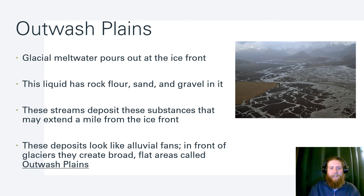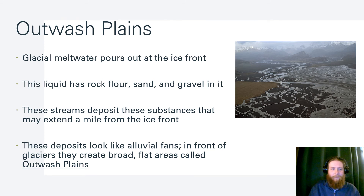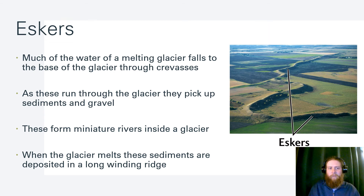Outwash plains are glacial meltwater pouring out the ice front, carrying rock flour, sand, and gravel. These deposit as the water slows down, up to a mile in front of the ice front, and look a lot like alluvial fans of rivers. Eskers form when water inside a melting glacier falls to the base, picking up sediments and gravel, forming miniature rivers inside the glacier. When the glacier melts, these deposited sediments form long, winding ridges called eskers.